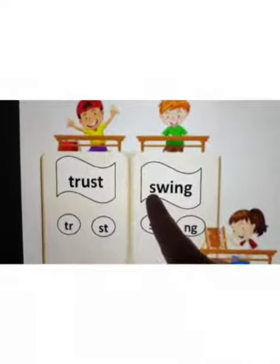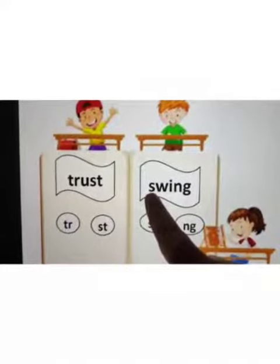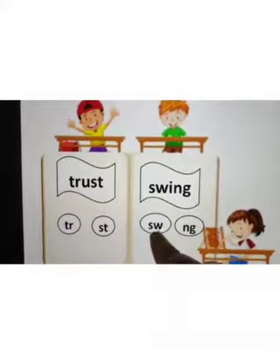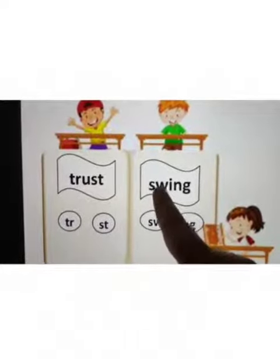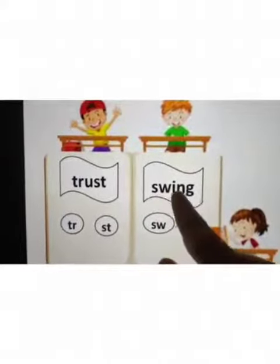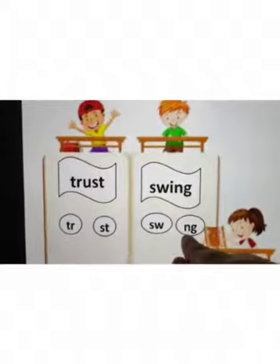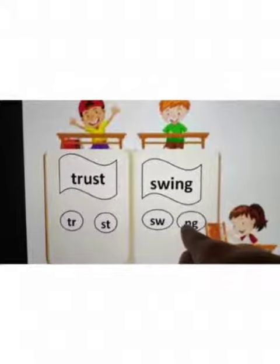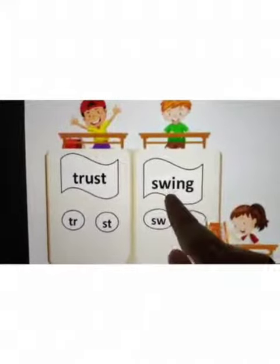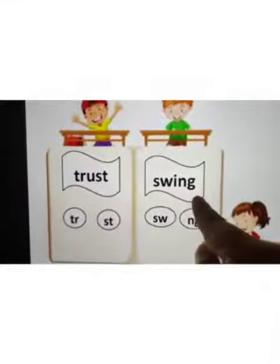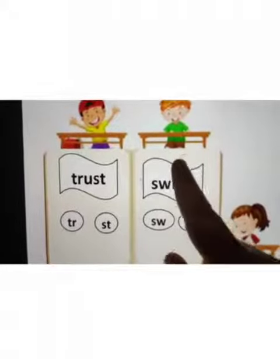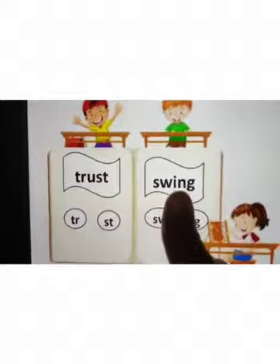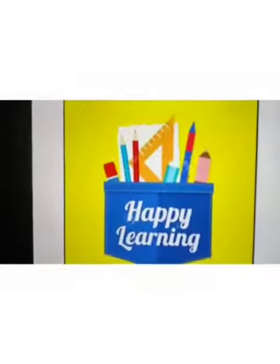Let's try one more. S and W put together makes SW. So SW-I-N-G. Now N and G when put together makes the NG sound. There are ample games for you on blends — I hope you will enjoy them. Happy learning!